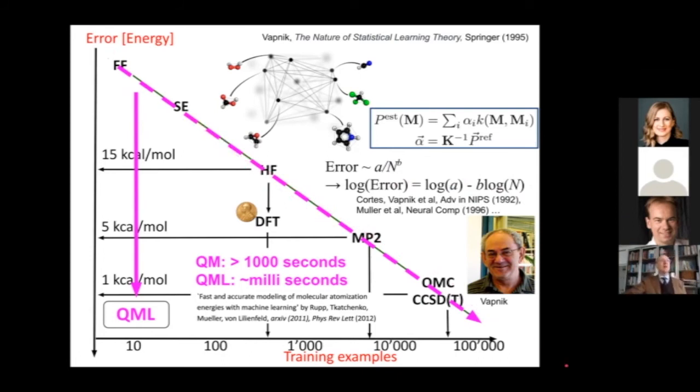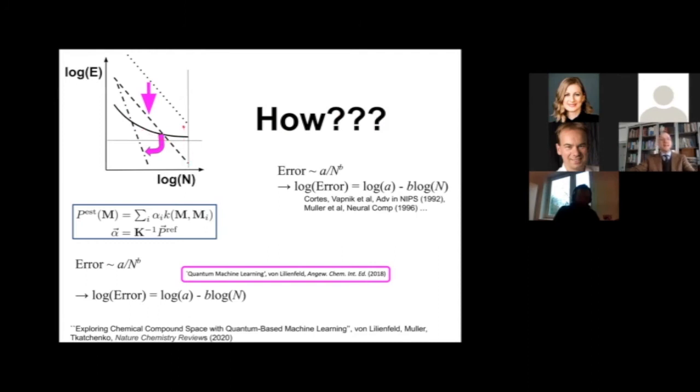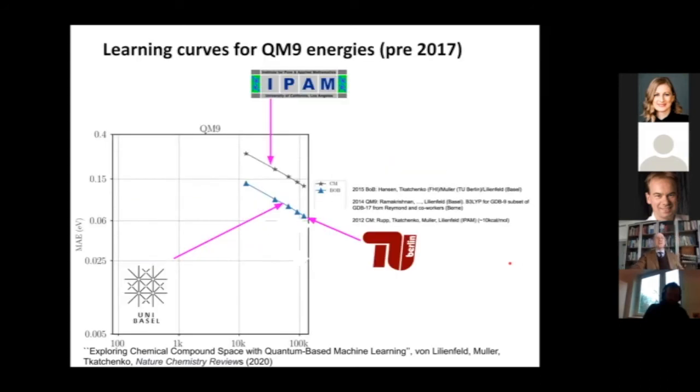You have to invert the kernel matrix spanned by all your training instances. Once you're trained on this, you can make a new prediction anywhere in between, and that's very fast. Vapnik, who formalized this approach in the 90s within statistical learning theory, showed that the prediction error, the leading term, must decay inversely with training set size. If you logarithmize the error and training set size, you should obtain a linear form.